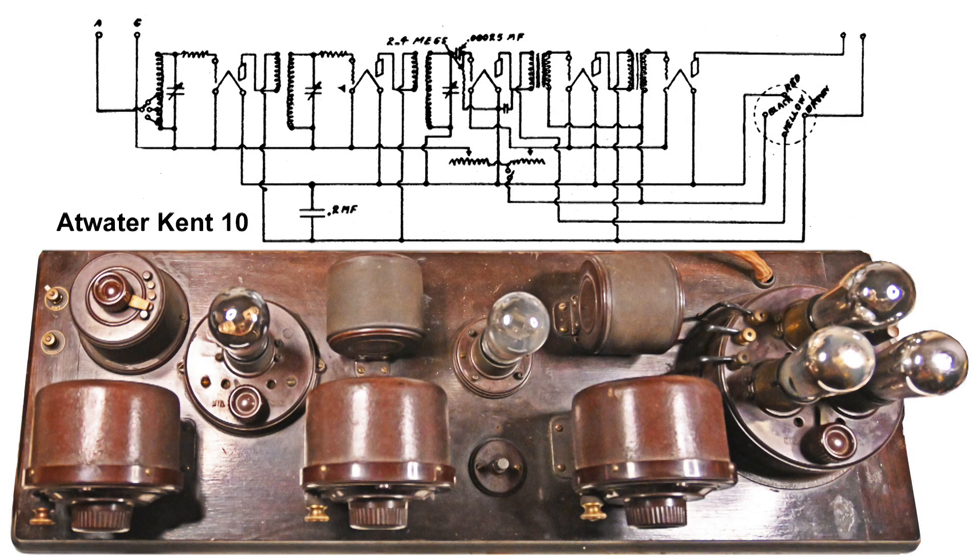This is an Atwater Kent 10 breadboard. It was manufactured in 1923 and I want to point out a few things before I get into the video. Let's start all the way to the left here. This is an antenna switch and also the antenna coil, and you can clearly see that on the radio. It is in a tank circuit.